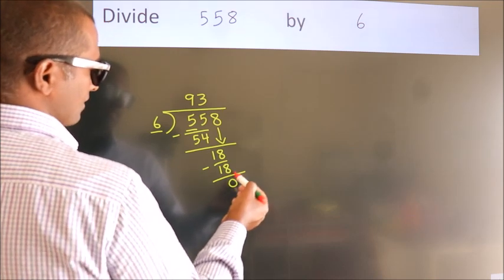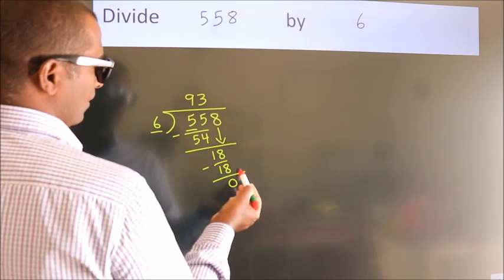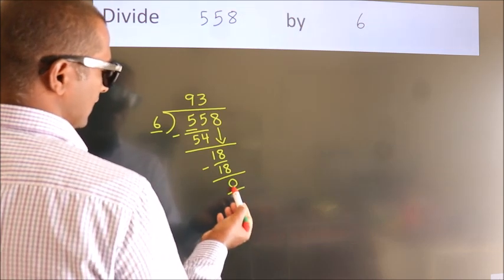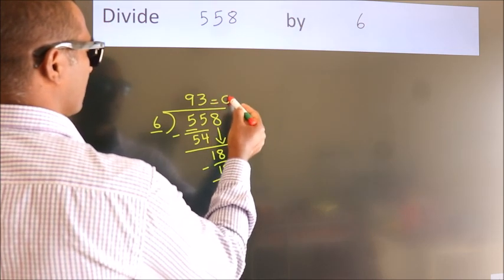After this, no more numbers to bring down. And we got remainder 0. So this is our quotient, 93.